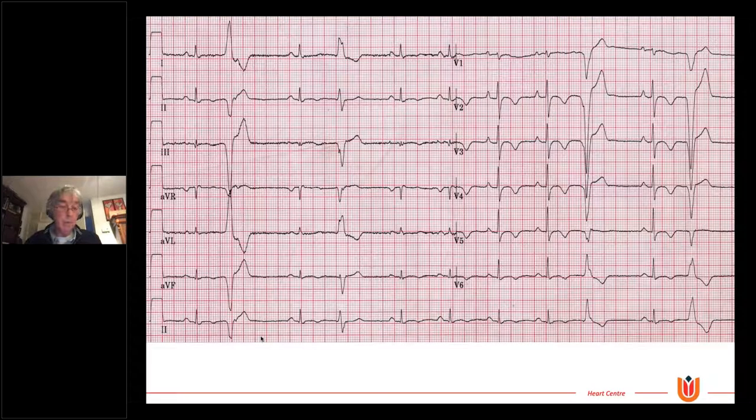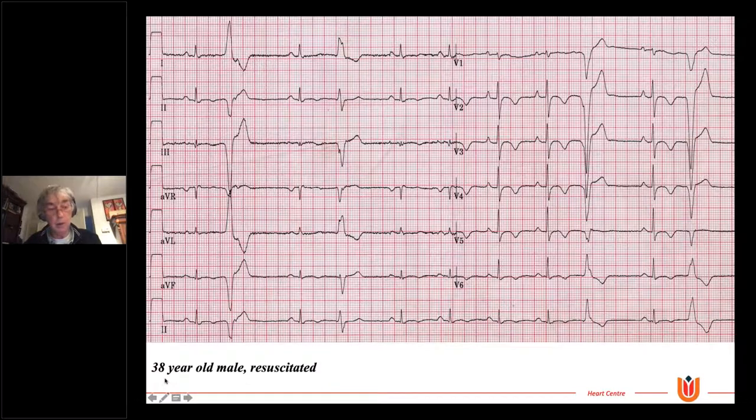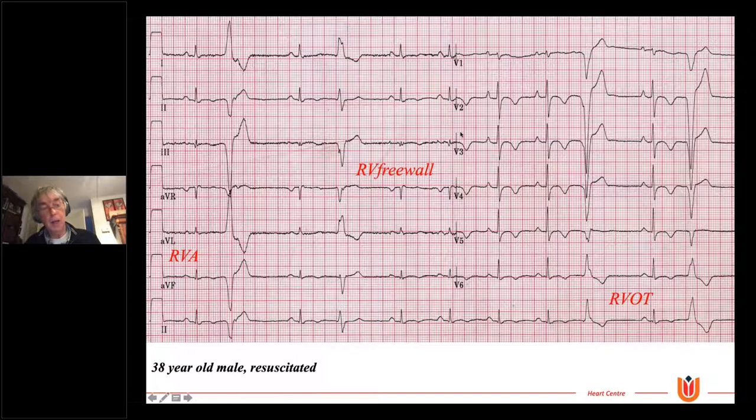This is a typical EKG from a patient who was resuscitated at 38 years of age. And also here you can see, in the right ventricle leads, the negative T waves here in V2, V3, V4, V5. And what you also see here is a lot of ventricular ectopy. And the ventricular ectopy actually arises from three sites in the right ventricle, which in the original description of the disease were considered the predilection sites of ARVC. One is from the right ventricular outflow tract, one is from the right ventricle free wall, and one is from the right ventricular apex.